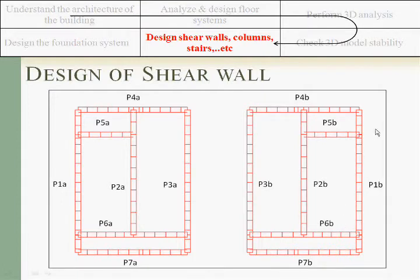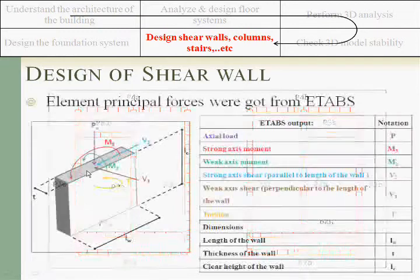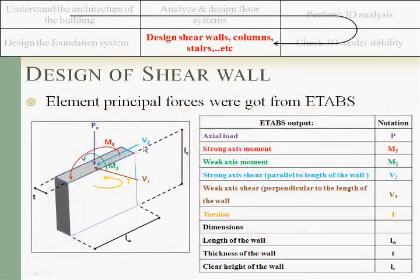We have divided it to different piers but it was designed as one core. We consider the axial load that is coming for each pier, the moment on the strong axis, the moment in the weak axis, the shear in the strong axis, the shear of the weak axis, and we have considered the torsion.